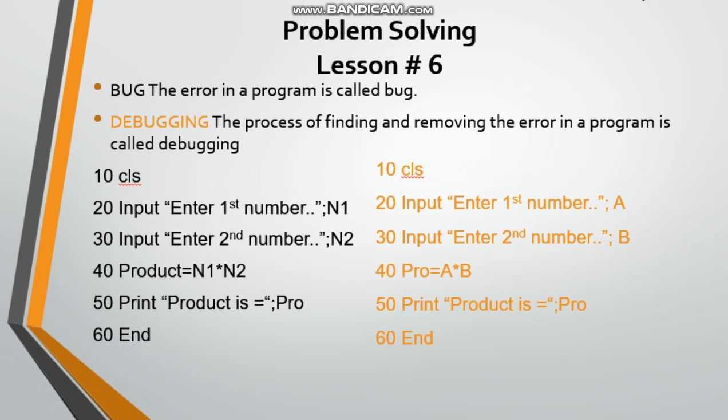So what is the bug in this program? Let me tell you. This program will not run on your computer because it has a bug. In the program, we have N1 variable and N2 variable. Product equals N1 multiplied by N2, but the bug is in print product. The variable Pro is the bug.